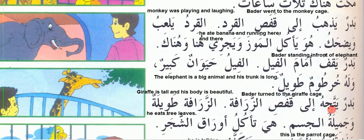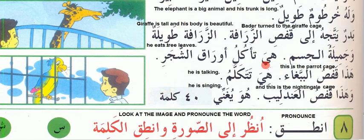'Badr yatawaqqafu — yatawaqqafu ila al-qafas al-zarafa' — Badr turned to the giraffe cage. 'Zarafa tawila wa jisumuha jamil' — giraffe is tall and its body is beautiful. 'Tawila' means long/tall. In Arabic, giraffe is a feminine noun, so we use 'taakul' not 'yaakul'. 'Awraq al-shajar' means tree leaves; 'awraq' also means papers.